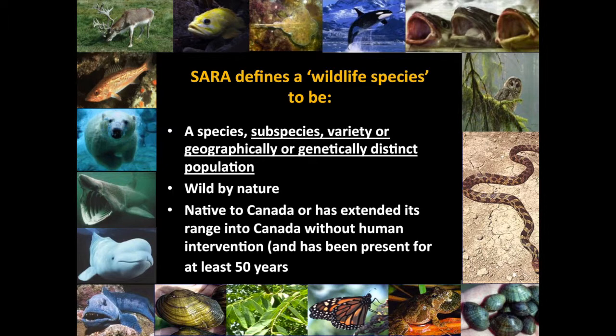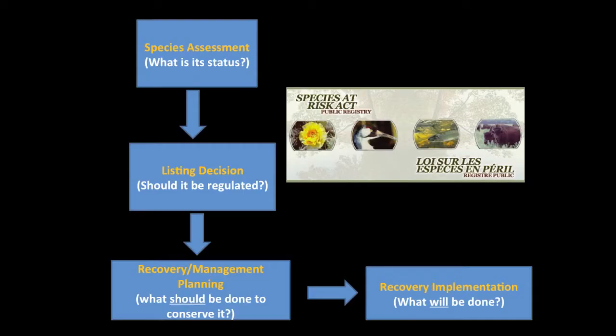SARA, the Species at Risk Act in Canada, does embrace the notion — similar to definitions of biological diversity — that there is diversity below the species level, and gives us essentially permission to acknowledge that for a species and to assess the status for those units separately. But the species assessment process is only the beginning of a very large chain of events supposed to occur in the cycle of species at risk designation and recovery.